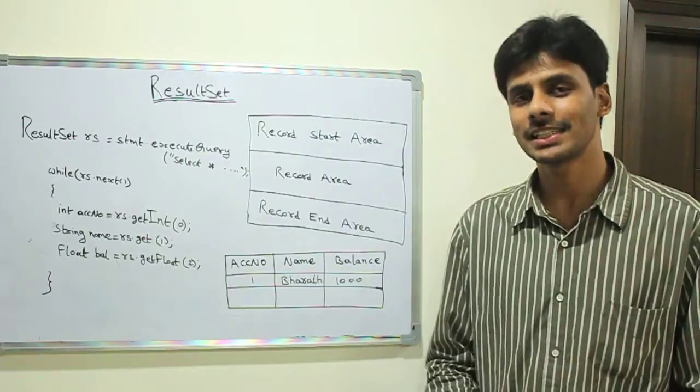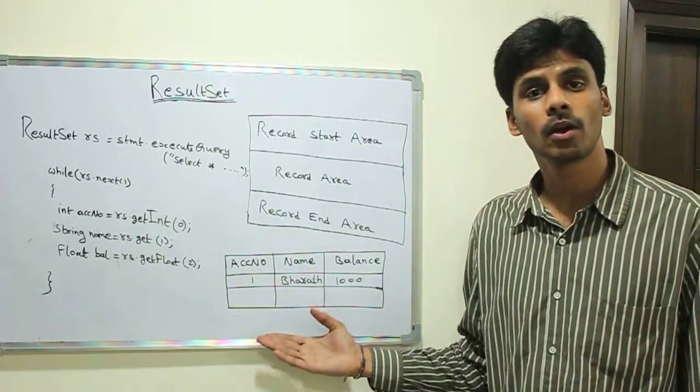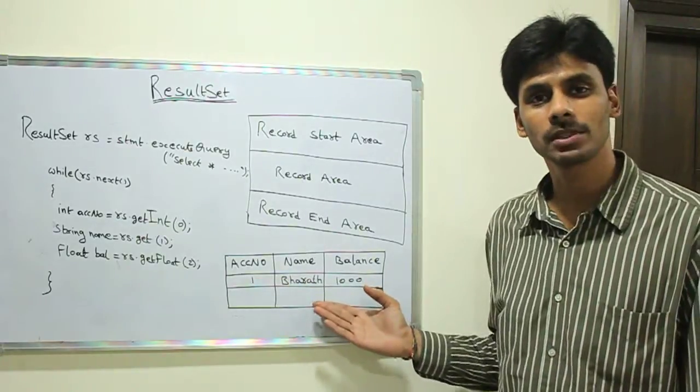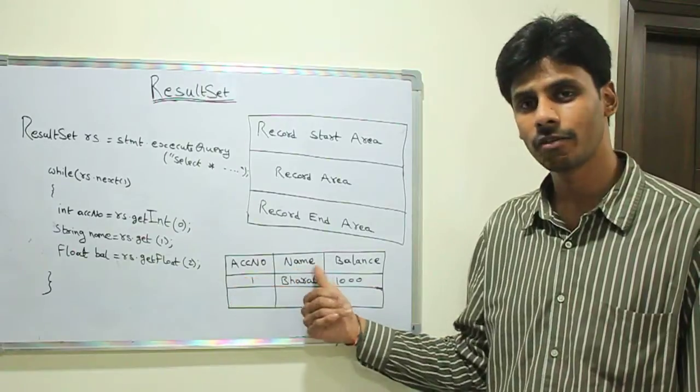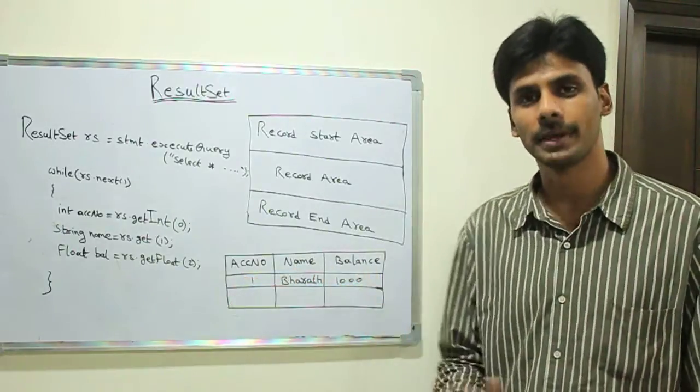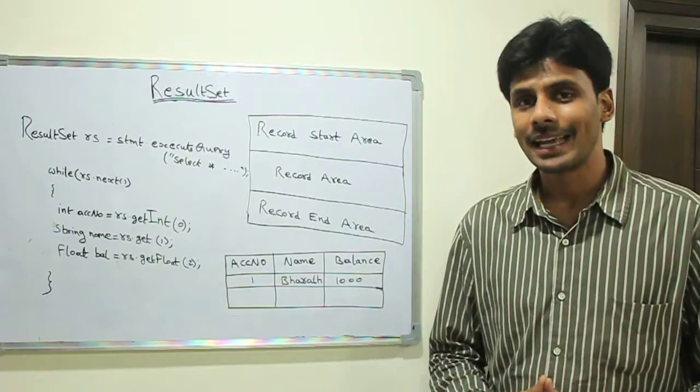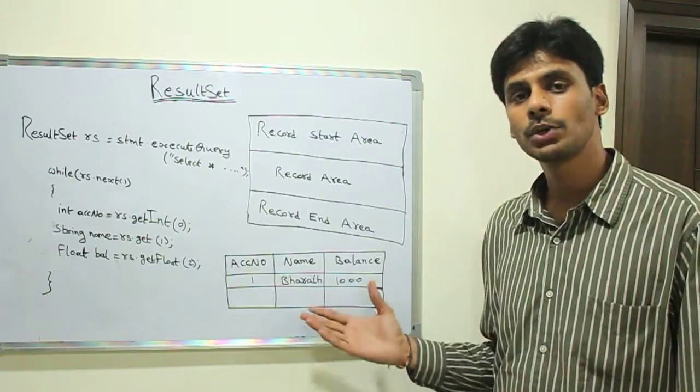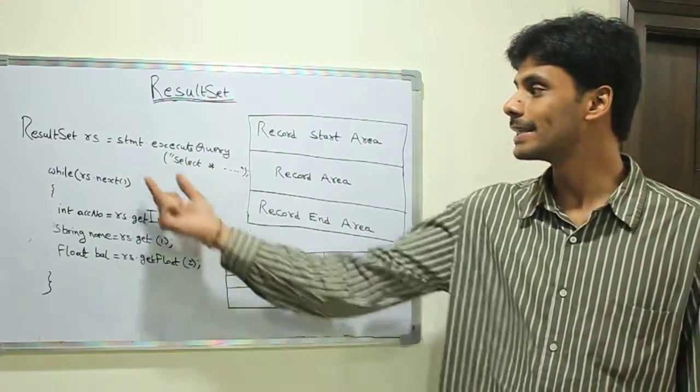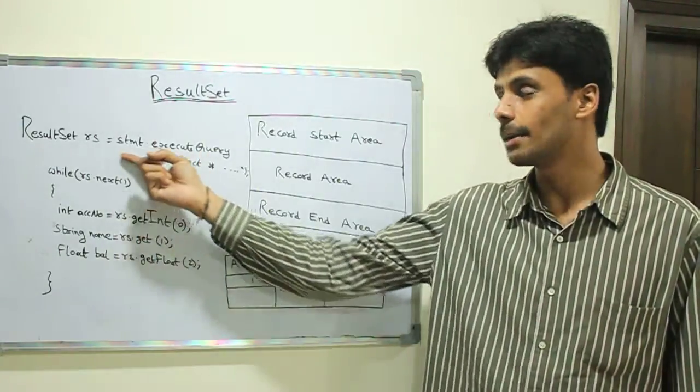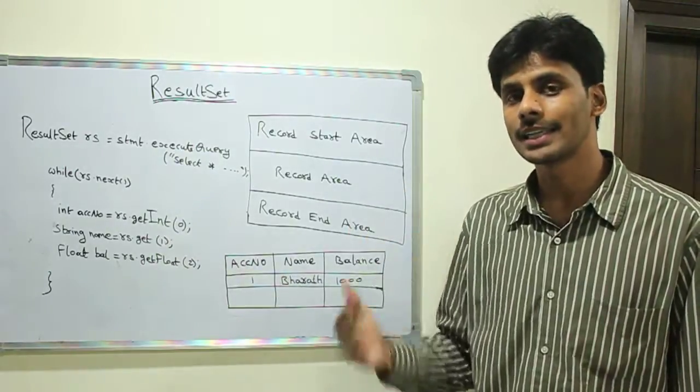Let's get started with an example. Say we have a database table called account which has three columns: account number, name, and balance of type number, varchar, and number. From within your Java application, to execute a query and retrieve the rows in this table, we use the executeQuery method on the Statement interface. Once you create a connection and create a statement from that connection, you execute the query using the executeQuery method.